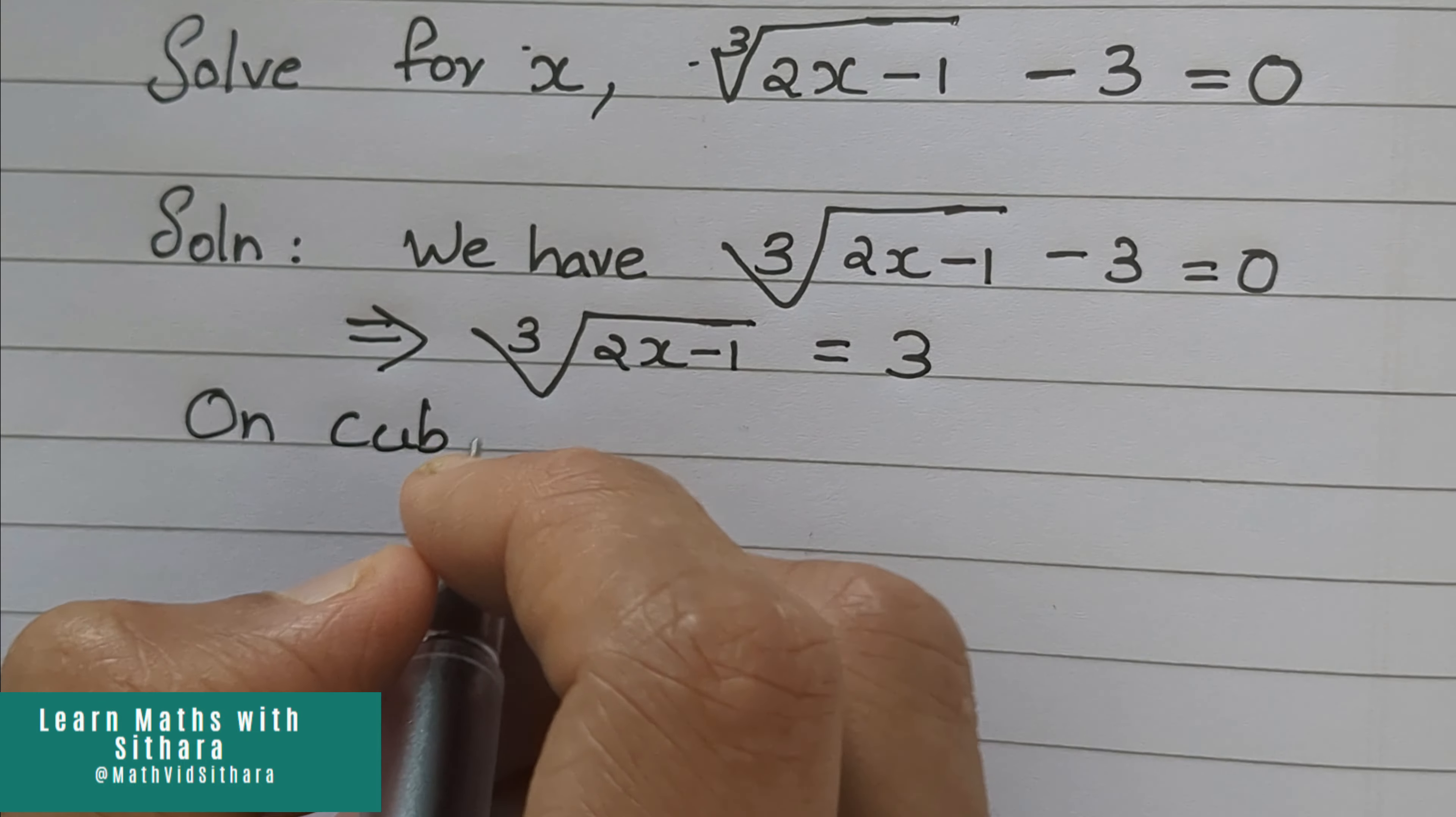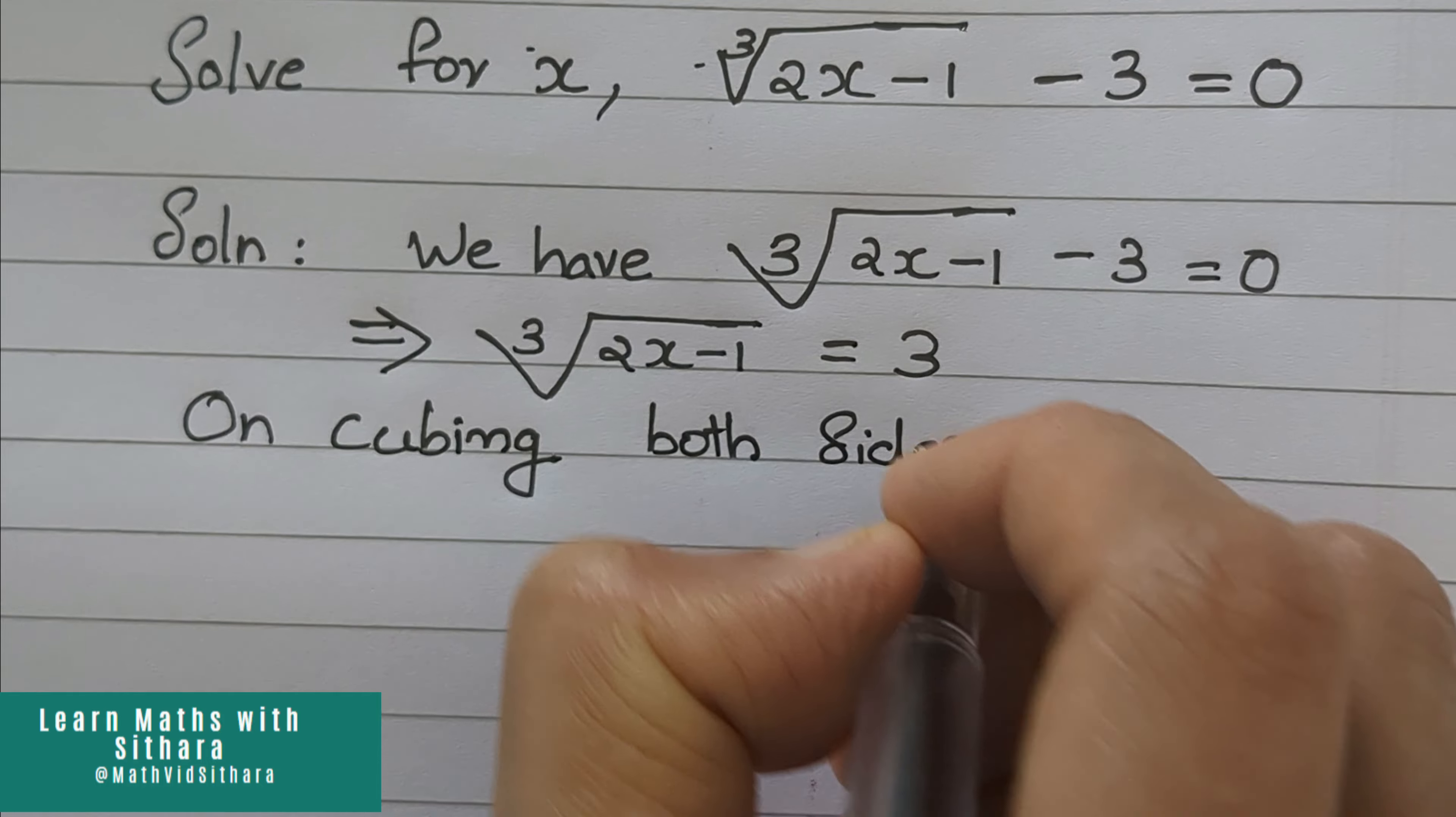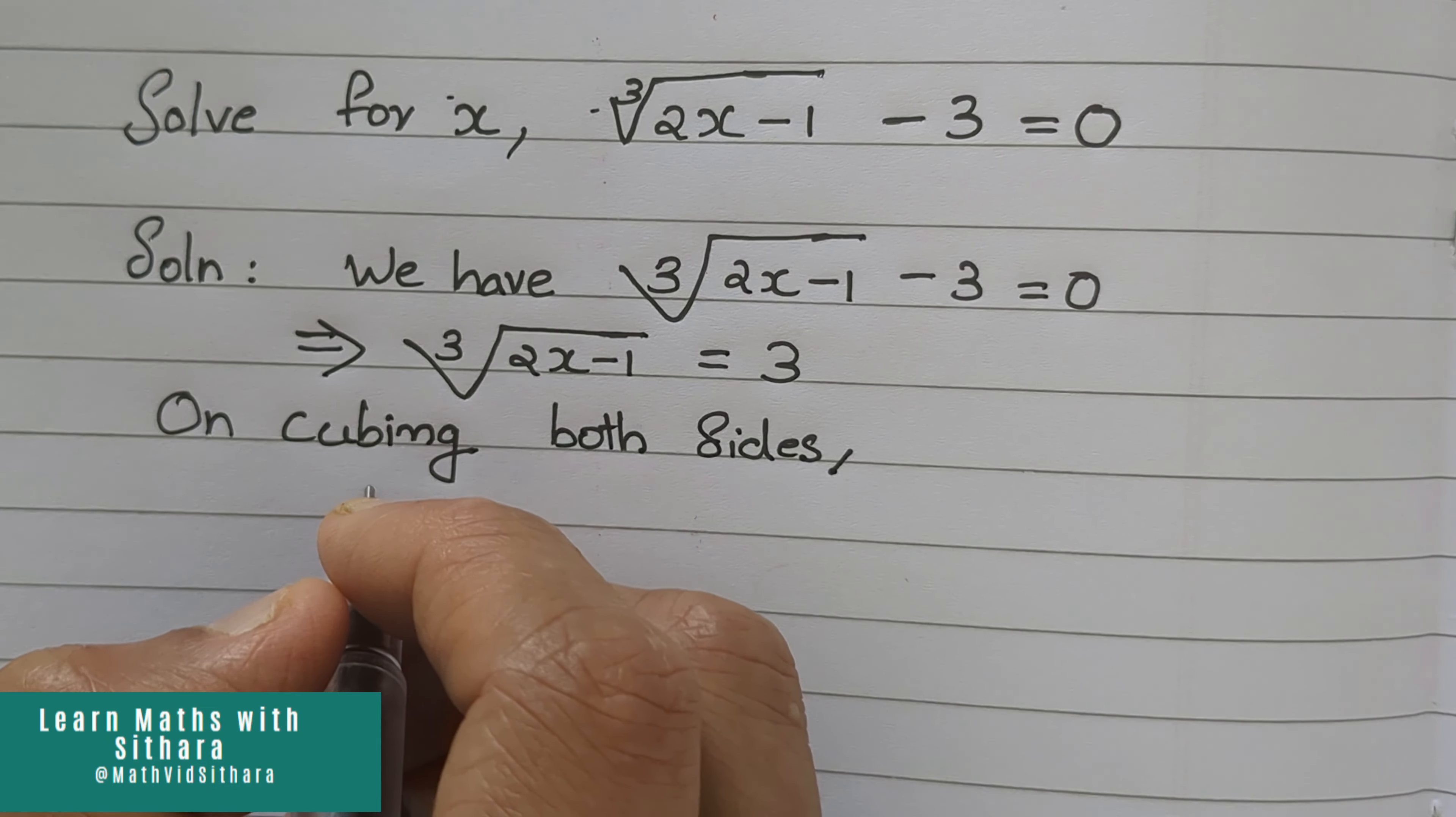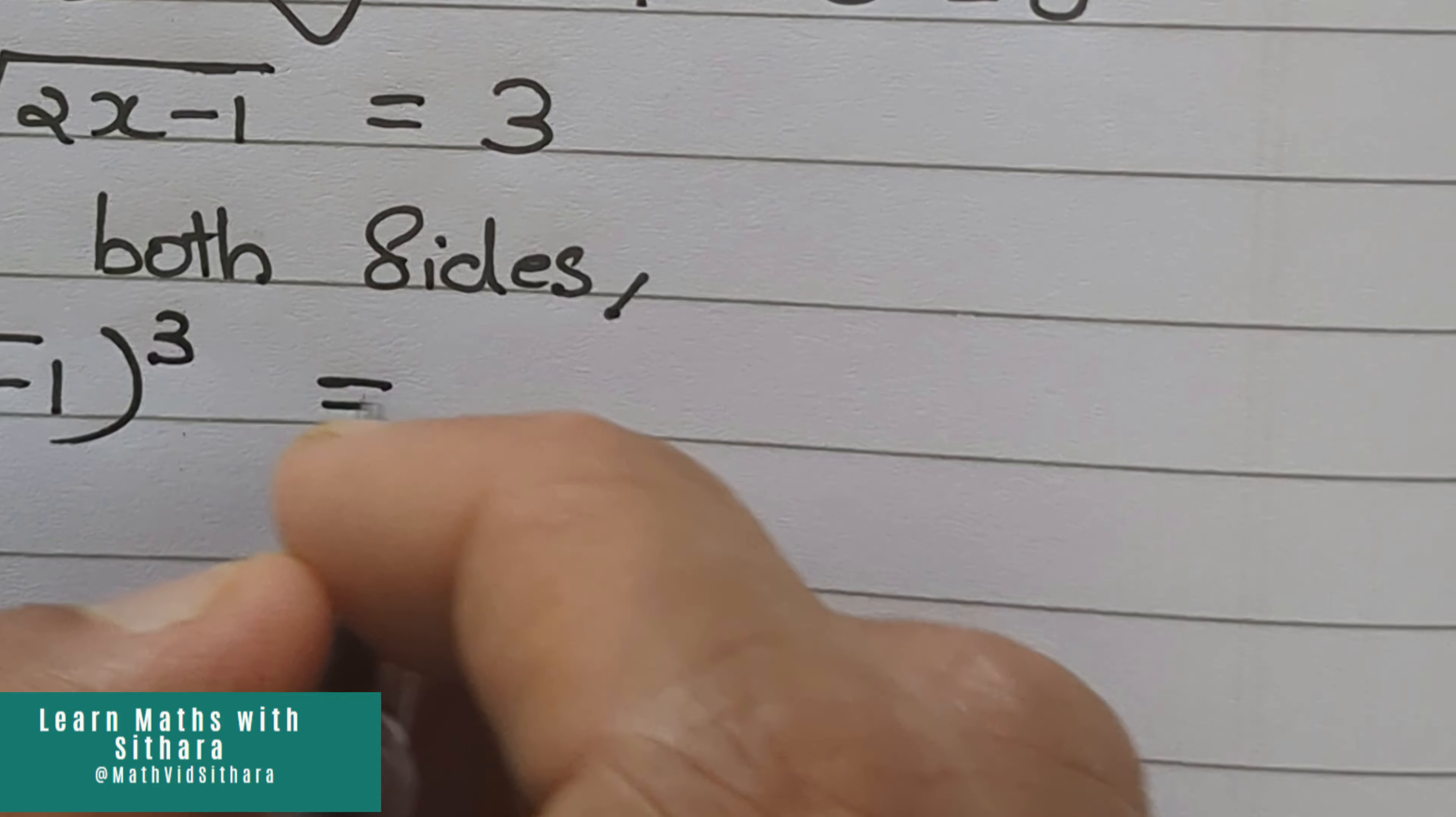On cubing both sides, that is on cubing the equation on both sides, we will get 3 root 2x minus 1 raised to 3 equal to 3 cube.